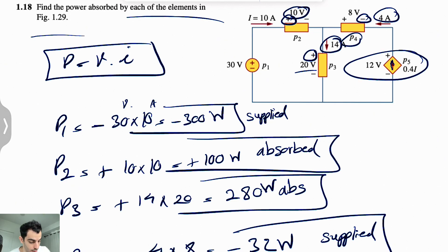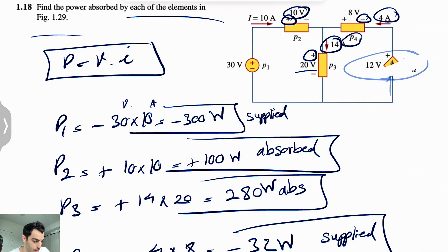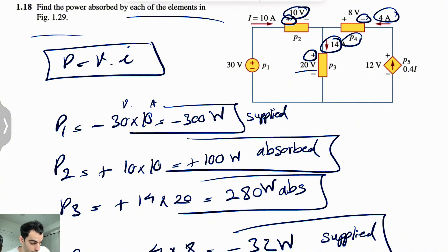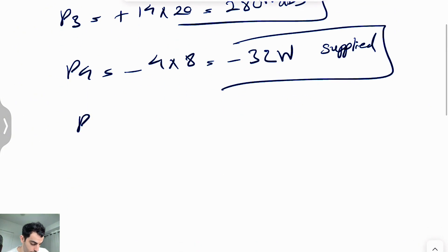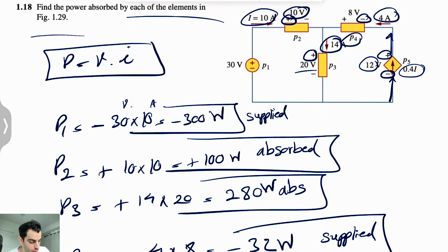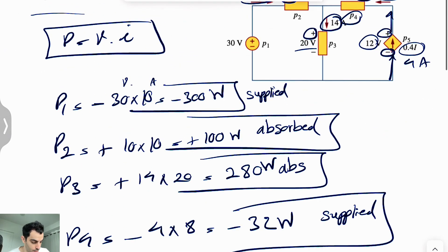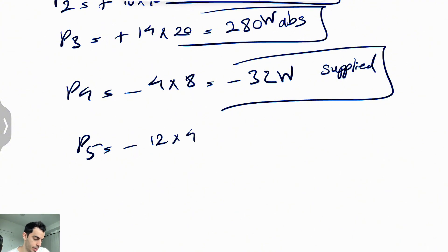For the last one, P5, this arrow shows the current direction. Don't get confused — a very common mistake is to think it's entering the positive pole, but actually the correct direction means it's entering the negative pole and exiting from the positive. So it's going to be a negative power. We have 12 volts and 0.4I, and we know that I is 10 amps, so this is actually 4 amps. 12 times 4 gives us negative 48 watts — the negative sign shows that it's supplied.